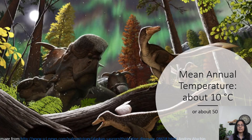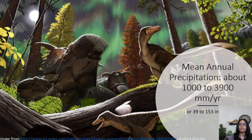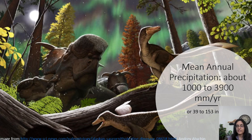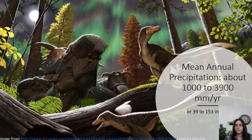Bringing this all together for the Arctic: mean annual temperature was about 10 degrees Celsius, or about 50 degrees Fahrenheit, and precipitation was anywhere from 1,000 to 3,900 millimeters per year — 39 to 153 inches. To give some perspective, at the University of Kansas our climate is not far from that 50–55 degree Fahrenheit range, with about 40 to 45 inches of rain per year.